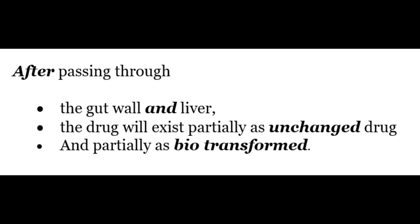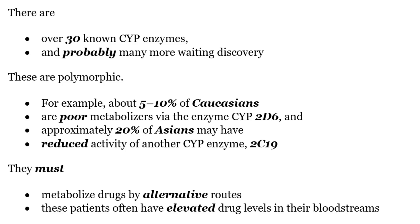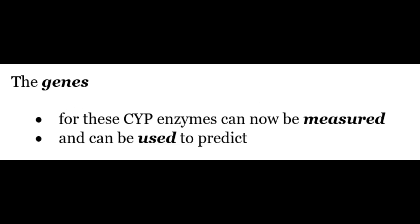After passing through the gut wall and liver, the drug will exist partially as unchanged drug and partially as biotransformed. There are over 30 known CYP enzymes and probably many more awaiting discovery. These are also polymorphic. For example, about 5 to 10% of Caucasians are poor metabolizers via the enzyme CYP2D6, and approximately 20% of patients may have reduced activity of another CYP enzyme, 2C19. These patients often have elevated drug levels in their bloodstreams. The genes for these CYP enzymes can now be measured to predict the range of effects and side effects in any particular patient.